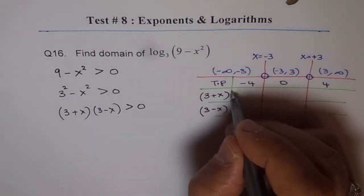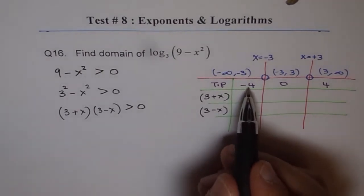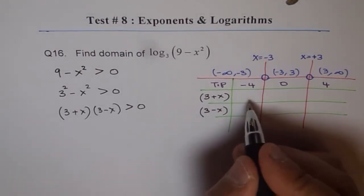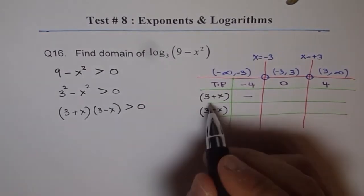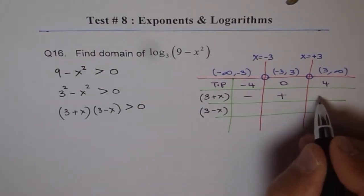If we test these factors with respect to the given points, if I write minus 4 here this quantity becomes negative. If I write 0 this is plus. If I write 4 it is positive.